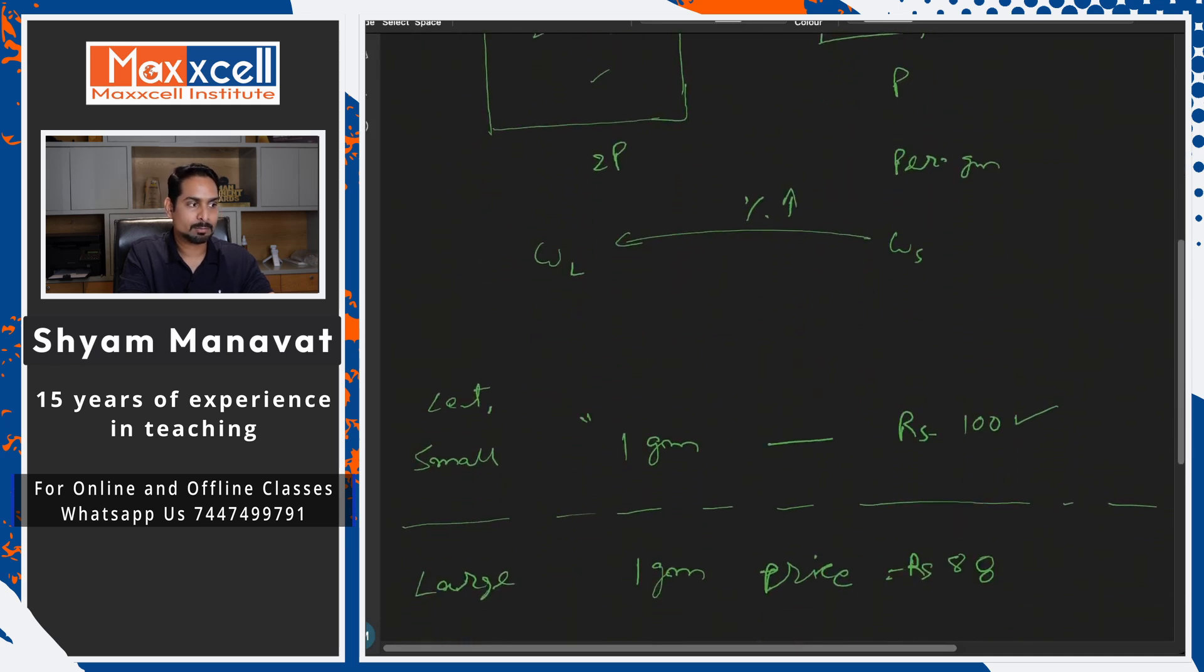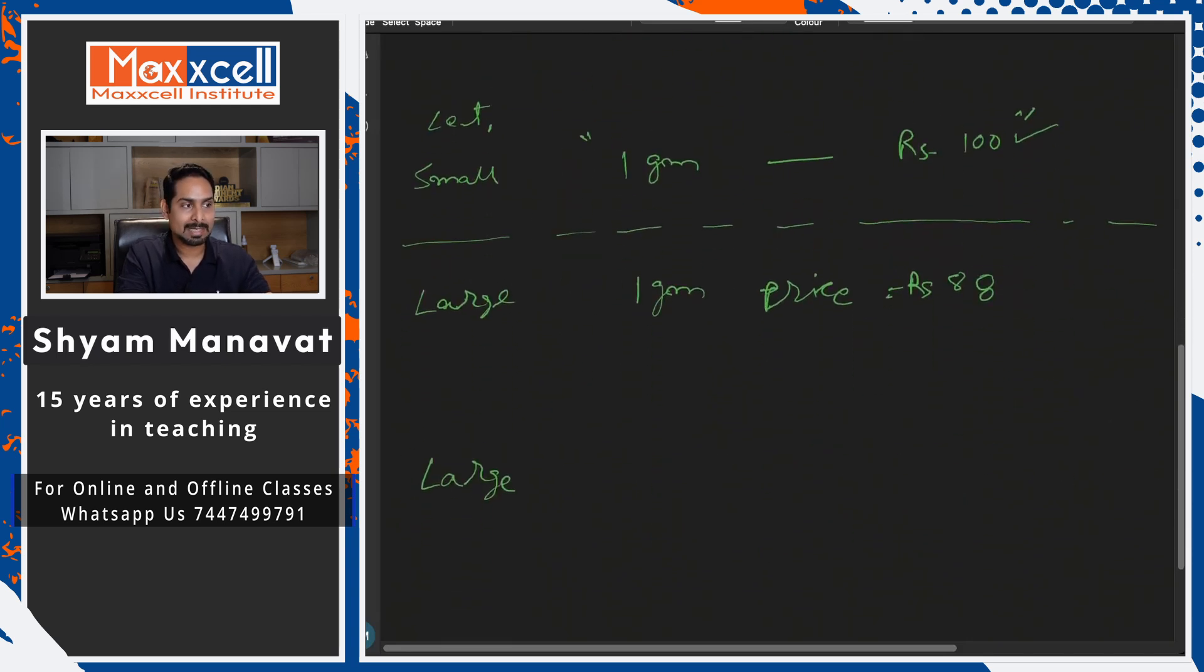Now here I assume the smaller box is 1 gram, small box price is 100 rupees. So when I compare with that, the large box price comes to how much? 200 rupees. And we do not know the weight, we need to find the weight.